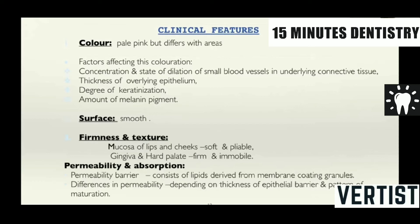What are the changes which are happening? For this, we should know what are the normal features which are usually present. Oral mucosa is pink in color. The color depends on the concentration and dilatation of the blood vessels. How much is the thickness of epithelium? What is the degree of keratinization? And the amount of melanin pigment. The surface is very smooth. The firmness and texture depends on whether it is the part of the lining mucosa or the masticatory mucosa.